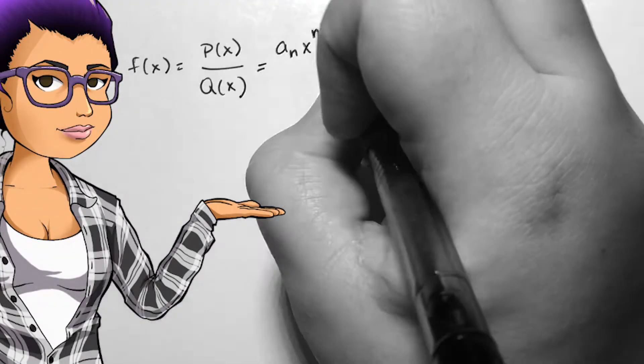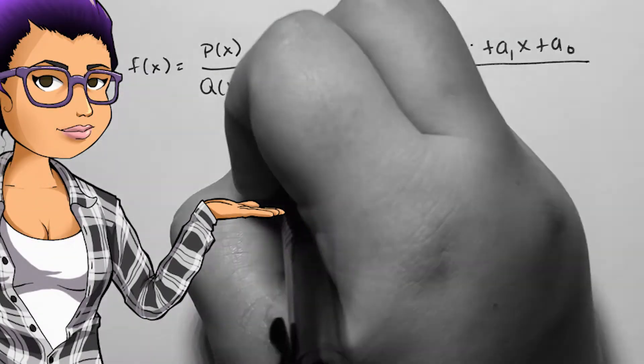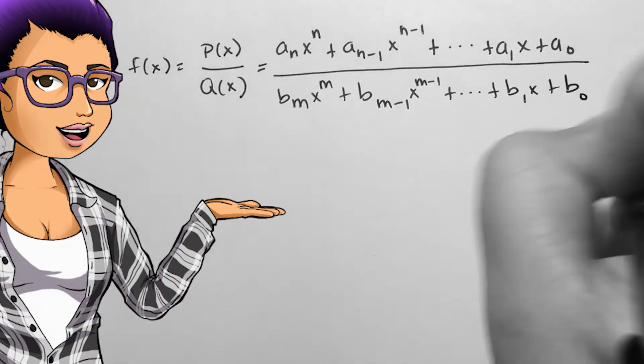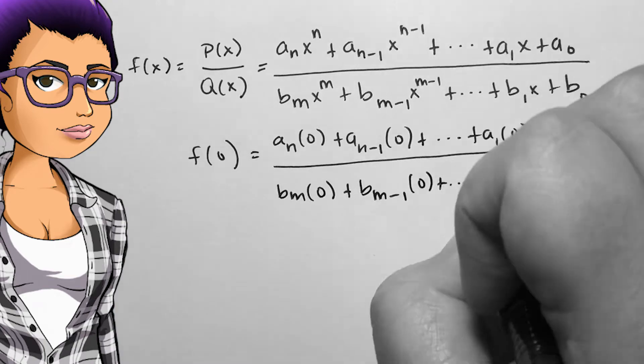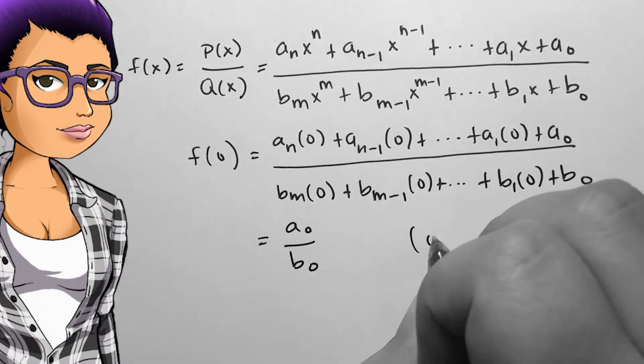To find the y-intercept of a rational function, x must be 0. This means that if the polynomials in the numerator and denominator are fully expanded, the y-intercept will be the constant terms divided.